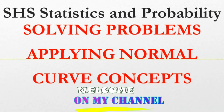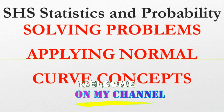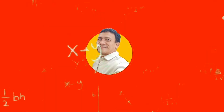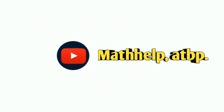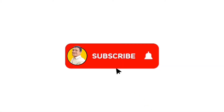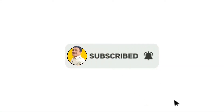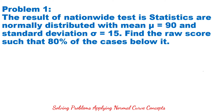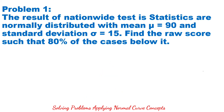In this video, we will discuss solving problems applying normal curve concepts. For our first problem, the result of nationwide tests in statistics are normally distributed with a mean of 90 and standard deviation of 15. Find the raw score such that 80% of the cases are below it.